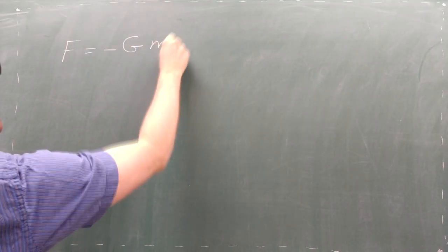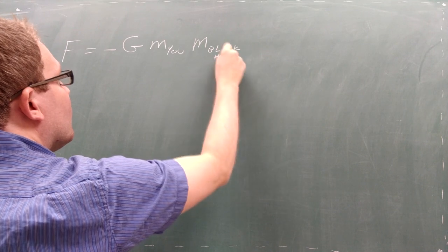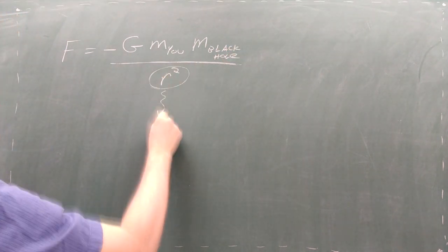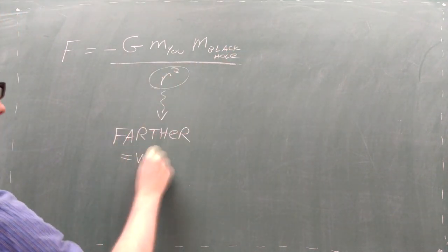The strength of the force of gravity you feel from a star, a planet, or a black hole decreases as you move farther away from the object of your attraction.